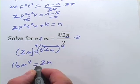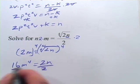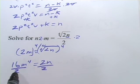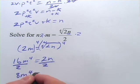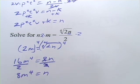And if I want to get n alone, I've got to get rid of that 2. So I'm going to divide both sides by 2. 16 divided by 2 is 8. So I get 8m to the fourth equals n. So that's a little bit of work on solving equations for specific variables.